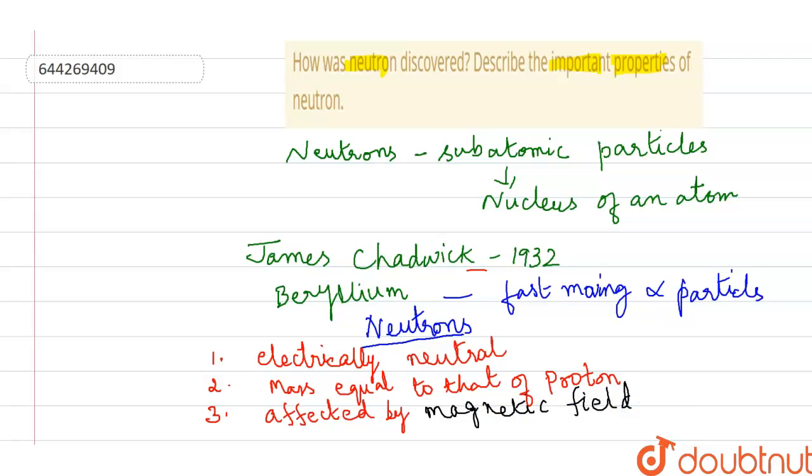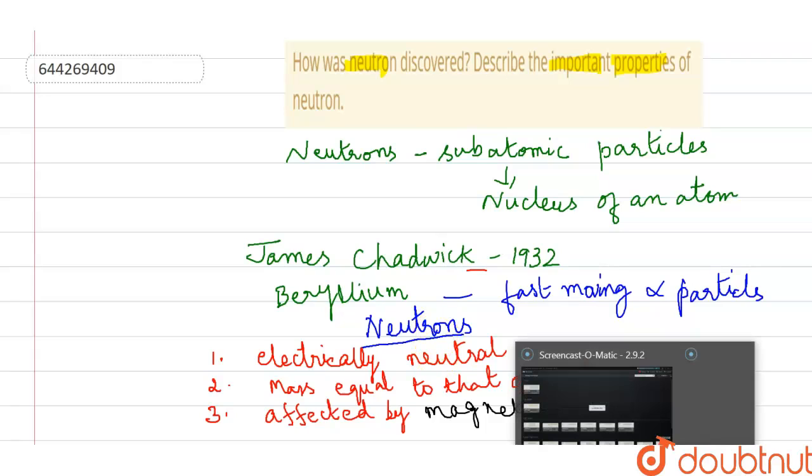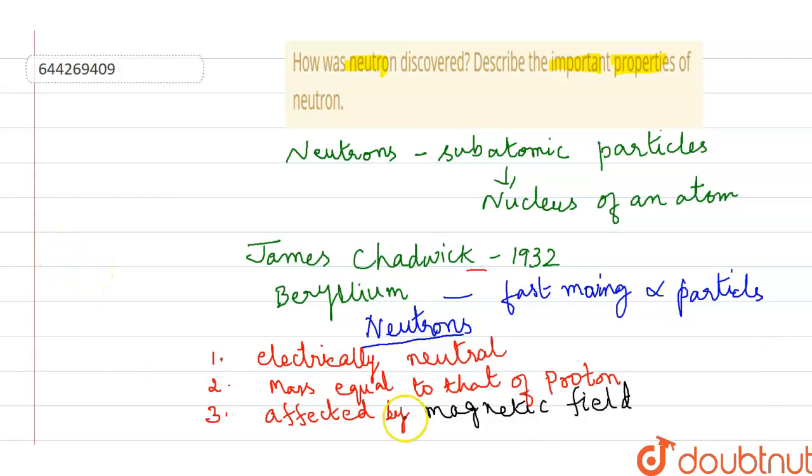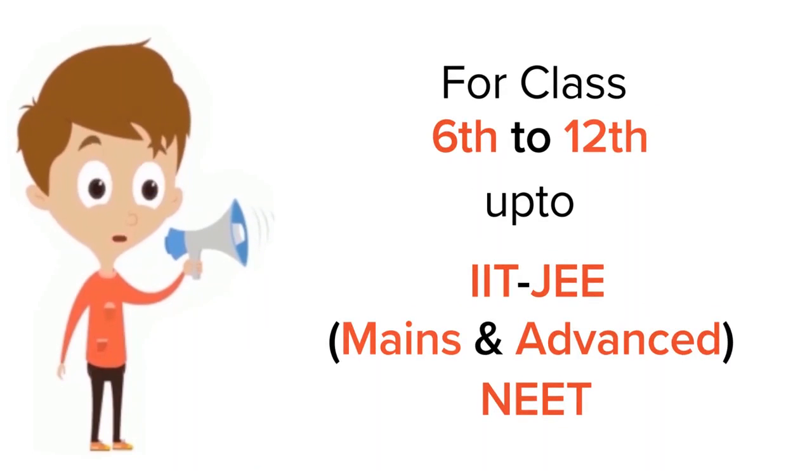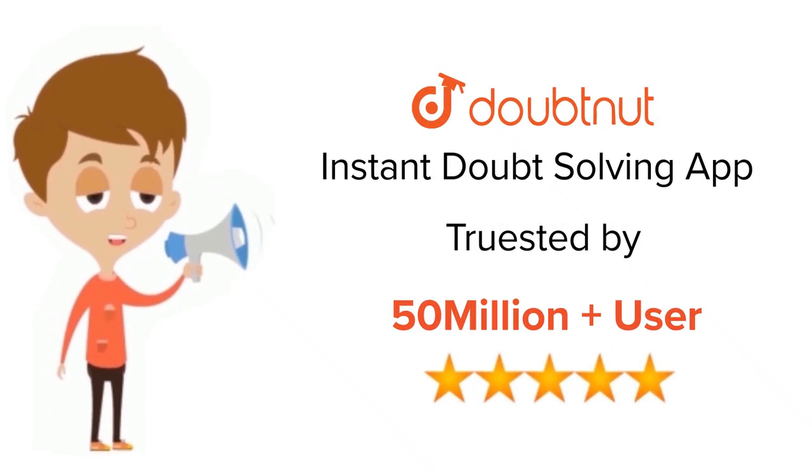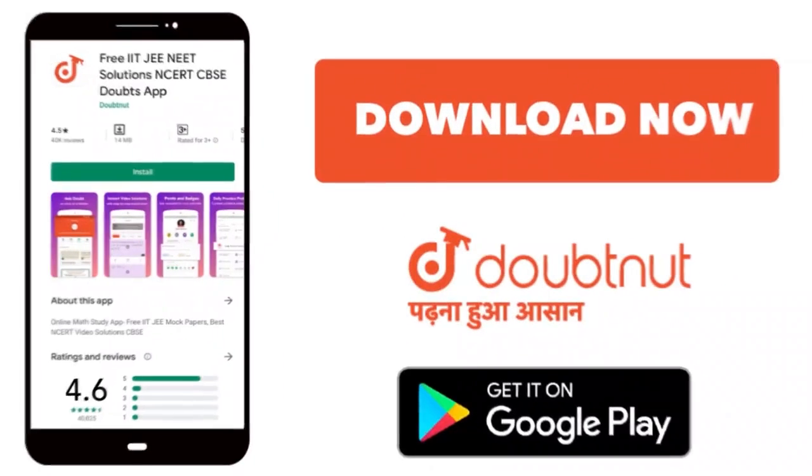Then total sum of neutrons and protons accounts to the mass of an atom, that is approximate mass of an atom. So dear children, I hope you have understood. For class 6 to 12th, IIT-JEE and NEET level, trusted by more than 5 crore students, download DoubtNet app today.